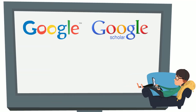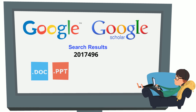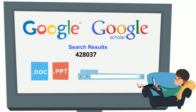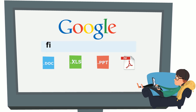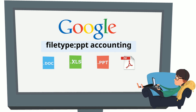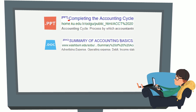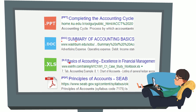When searching Google or Google Scholar, you can easily trim down your search results according to file type and web address. To trim down search results by file type, simply type: filetype, colon, preferred file format, then your search term. Some common file formats include PowerPoint, Word, Excel, and PDF.